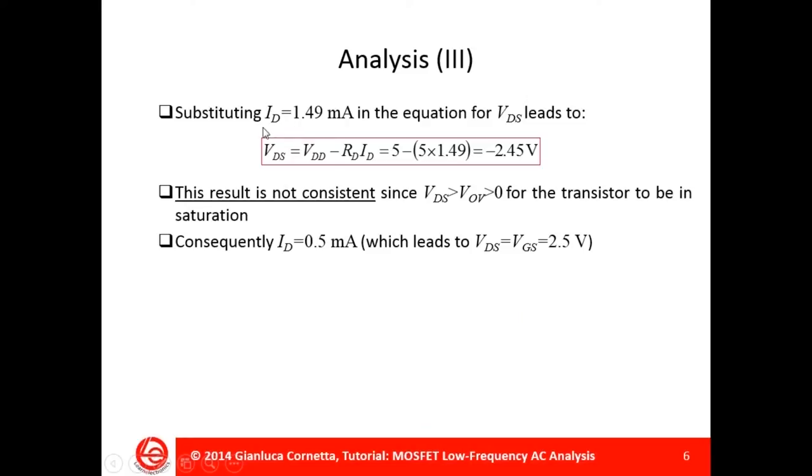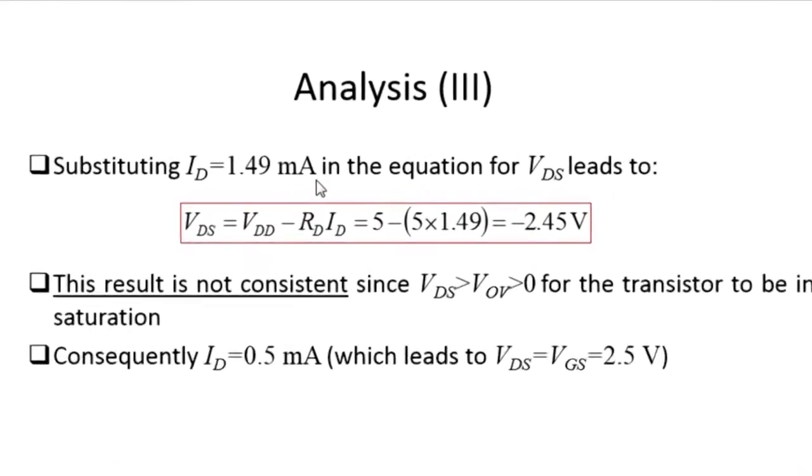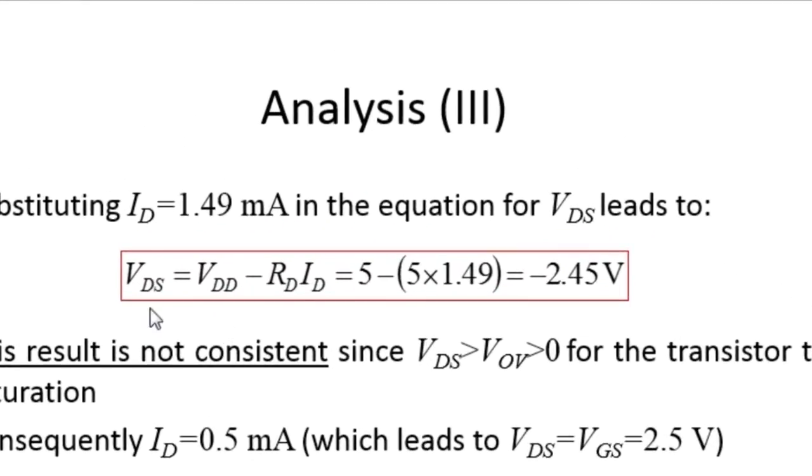If I replace ID equal to 1.49 milliamps in the second equation, I can calculate VDS. With this value of ID, I have a VDS equal to minus 2.45 volts. That is not consistent with the assumption of MOS transistor in saturation, since VDS must be larger than the overdrive voltage.